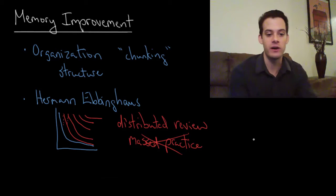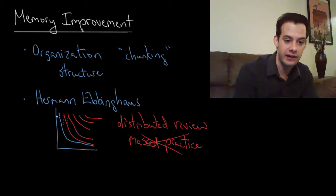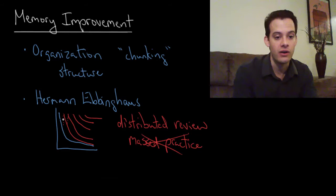Massed practice is what you want to avoid. It's trying to study everything all at once because if we look at this forgetting curve, no matter how much, even if your recall is close to 100% right after you're studying something, it's going to drop very quickly. The only way to prevent that from happening is to review that information over and over and over again until you have this nice high flat version of the curve.